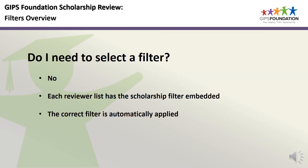Do you need to select a filter? No. Each scholarship reviewer list has the filter embedded within the list — reviewers do not select filters. This is done automatically when you select the scholarship reviewer list. Having the filters embedded in the lists makes it impossible to have the wrong filter or multiple filters applied when reviewing. Eligible applications are always displayed when using the scholarship reviewer list.